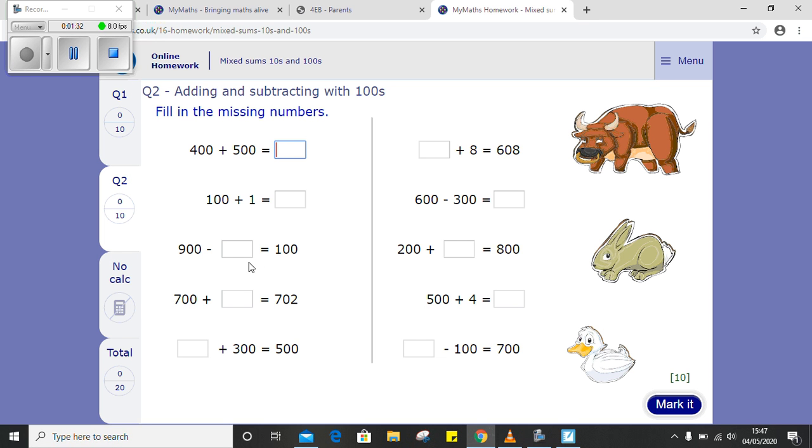900 subtract something is equal to 100. Think about that. If you know what 9 subtract 1 is, make it 100 times bigger. That may be able to help you out with that, guys. Looking forward to seeing how you get on with it. Hope you enjoy the rest of your day.